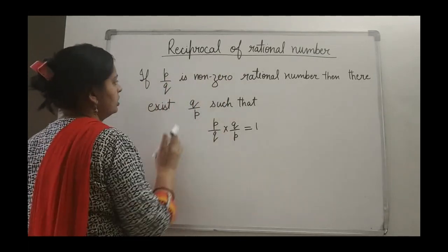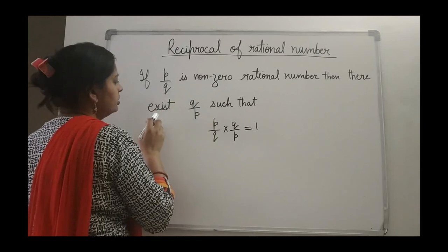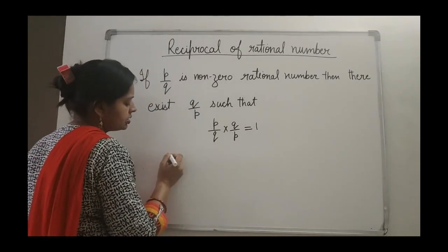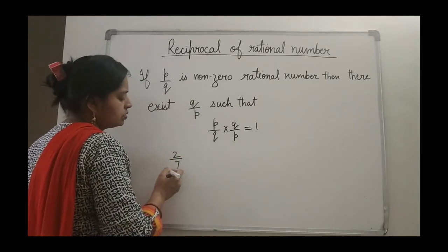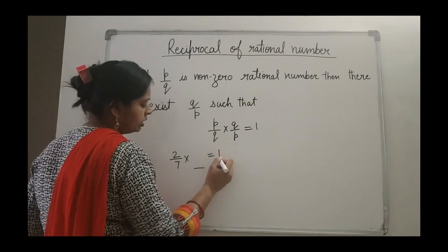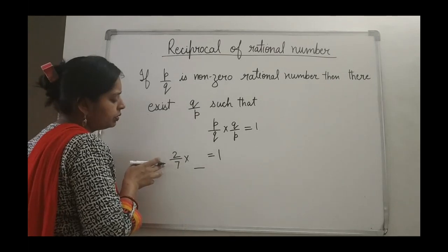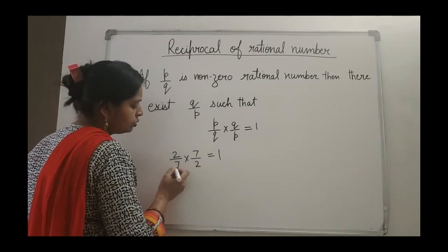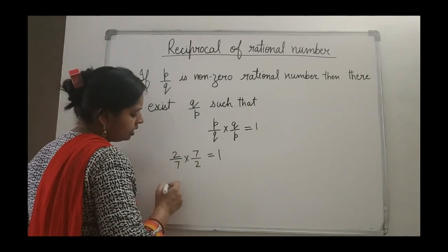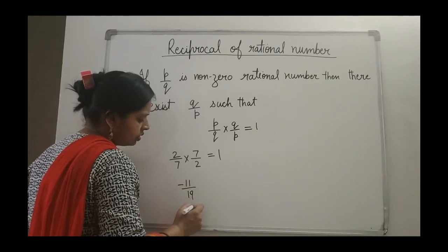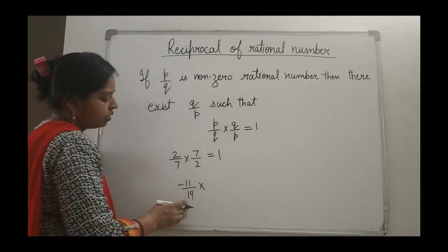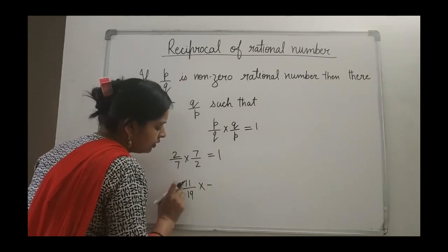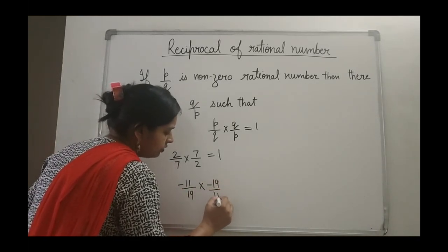Now the reciprocal of a rational number. If P upon Q is a non-zero rational number, then there exists Q upon P such that P upon Q into Q upon P gives 1. For example, the rational number 2 upon 7 — what number should be multiplied to get 1? If we reverse the position of numerator and denominator, the denominator becomes the numerator and vice versa, both can be cancelled and the answer is 1. If you have a negative rational number like minus 11 upon 19, the reciprocal is minus 19 upon 11, because negative times negative gives positive 1.